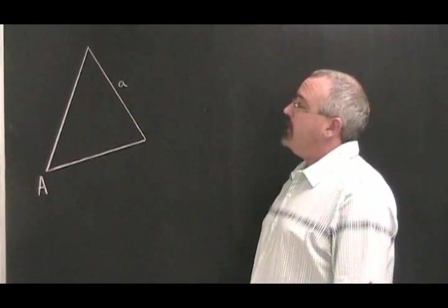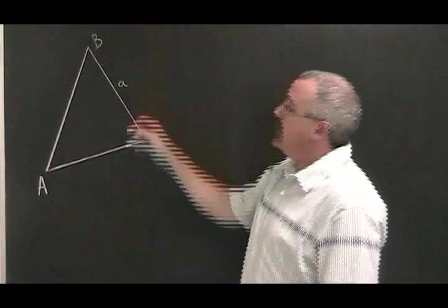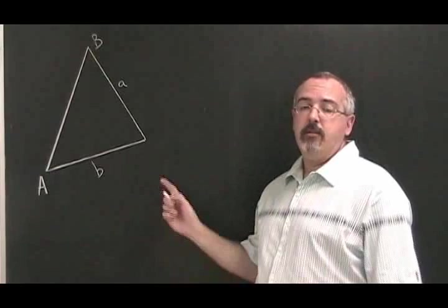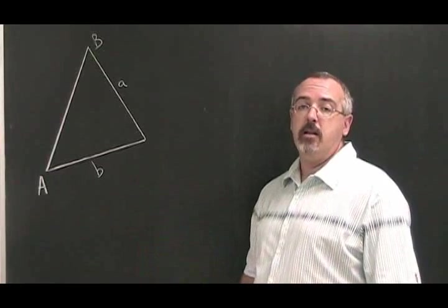So if I want to label this angle B, that means this would be side B. We will use this convention very often when we apply sine law and cosine law.